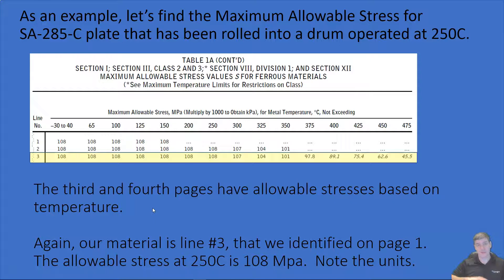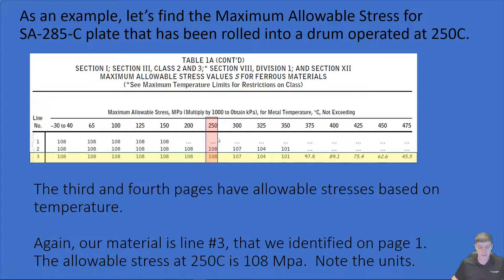Now we flip to pages three and four, which are a continuation of each other and tell us the allowable stress for the material. We continue on line number three and look for where it matches our temperature. At 250°C we have an exact match in the table, which tells us 108 MPa — that is our maximum allowable stress in MPa.